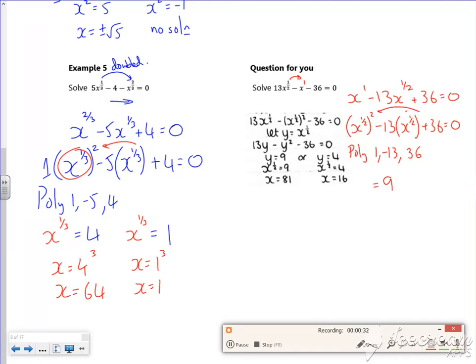But my something was x to the half, so I've got to square it, so I've got 81, 16. They're quite messy to get your head around, but once you get your head around them, they're a little bit easier to do.